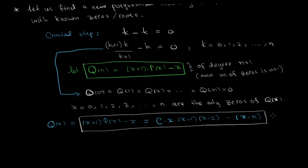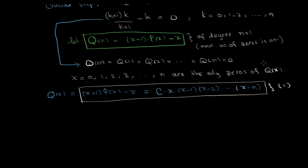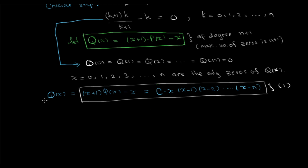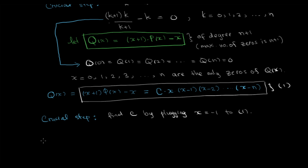We will use Equation 1 in the solution. We now have another unknown — the constant c. So we have two unknowns, P(x) and the constant c, and we must eliminate one to find the other. To find the constant c, the crucial step is to plug in x = -1, because by doing that, (x+1) becomes 0, so 0·P(x) = 0 and we don't see any P(x) when x = -1.